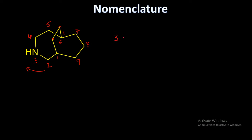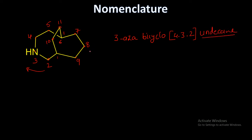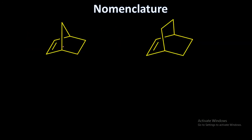The nitrogen is at position three. So we write 3-aza, then bicyclo. Counting atoms: four atoms on the left side (the bigger ring), then one-two-three on the other side, and two bridge carbon atoms, giving two. Continuing the count to eleven total atoms — for eleven we write undecane. This is the correct IUPAC name for this structure: 3-aza bicyclo[4.3.2]undecane.